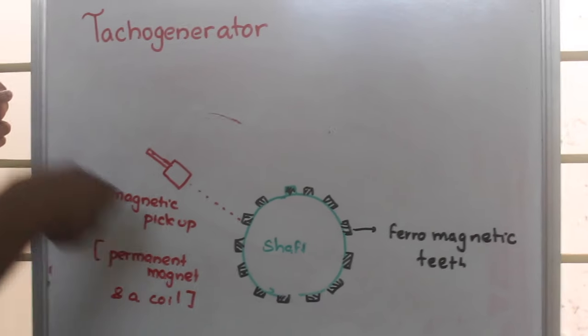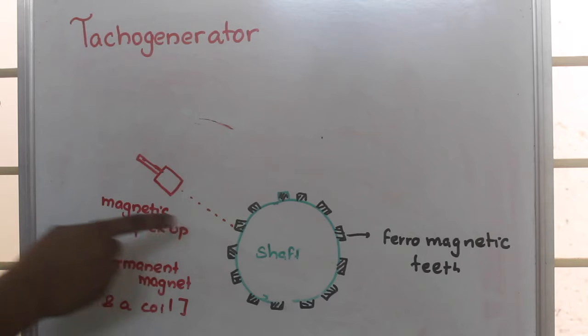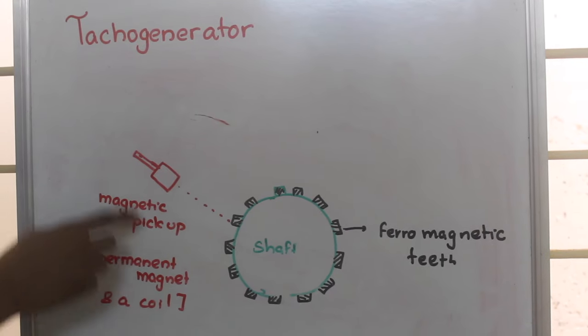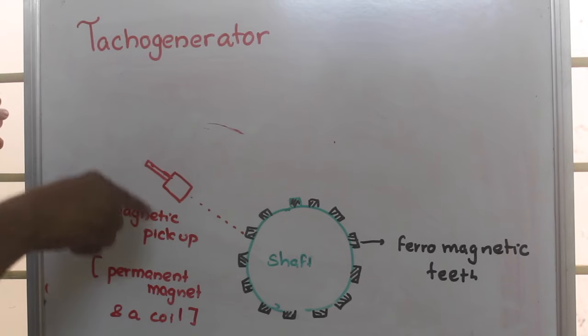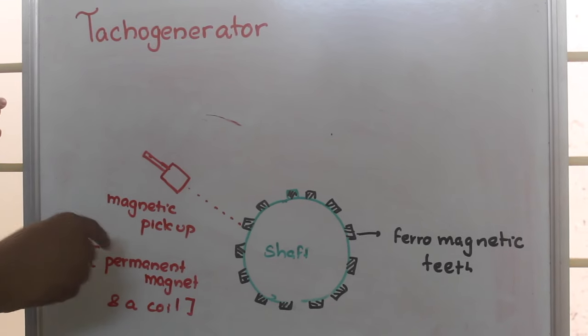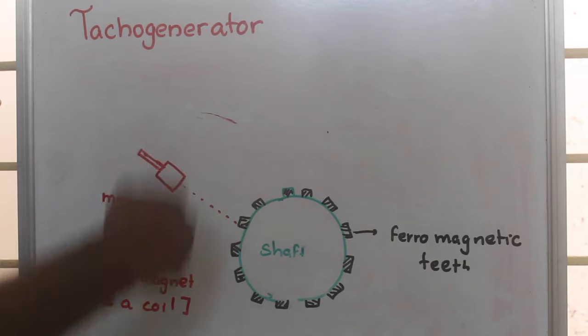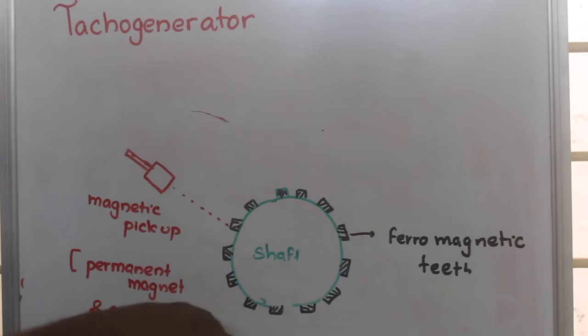Because of that change in reluctance, an EMF will be induced in the coil which is in this magnetic pickup. By measuring the EMF in the coil, we are able to find the RPM of this particular shaft.